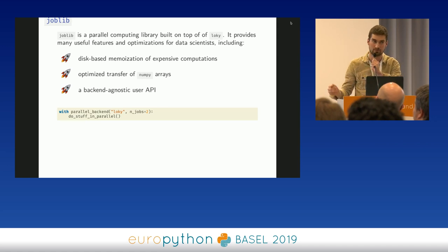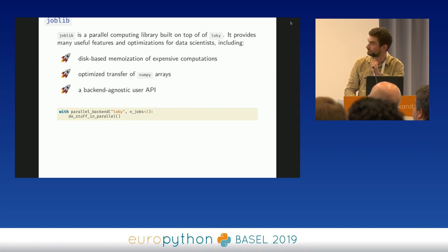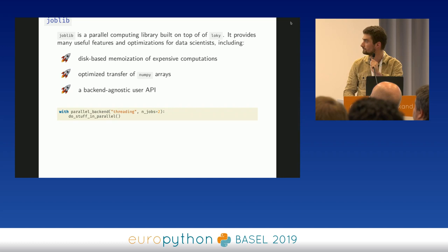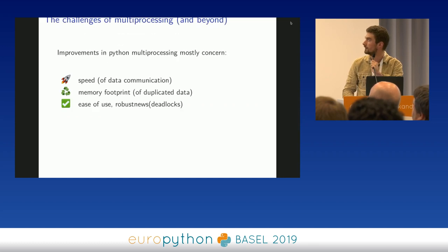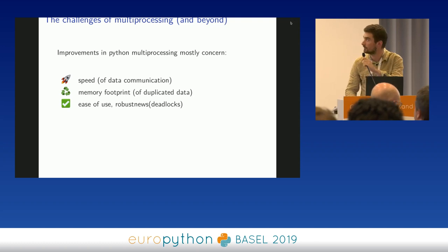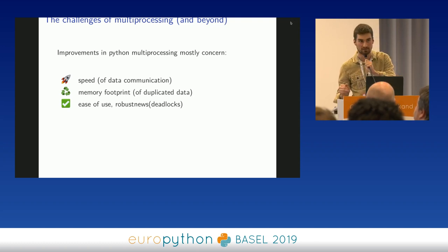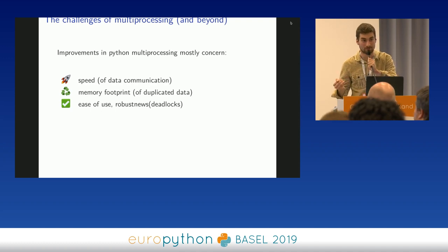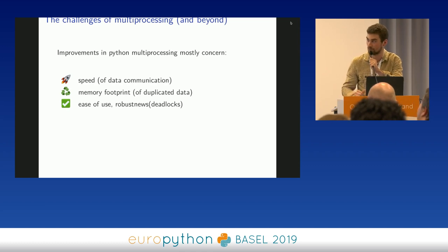Joblib also has a backend-agnostic user API, making it easy to switch from a threading backend to a multiprocessing backend. The last part of this talk gets more involved — it's about what happened recently in the multiprocessing community in Python and what problems we managed to fix, code-wise.